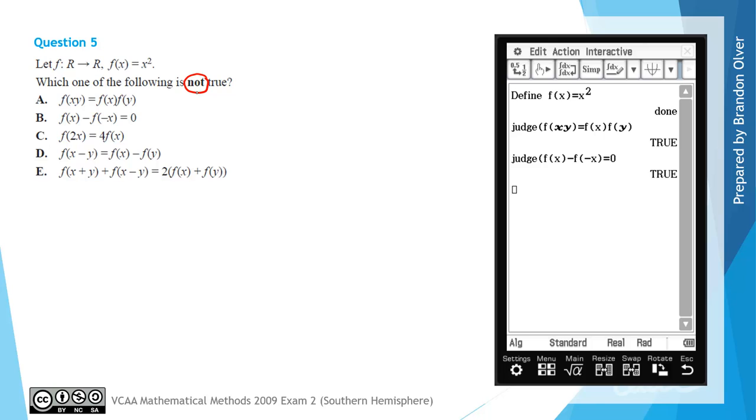We move on to option C. Dragging judge down, I want to judge whether f of 2x is equal to 4 times just f of x. Then hitting execute, that will say that's true, so that's not the answer we're looking for.